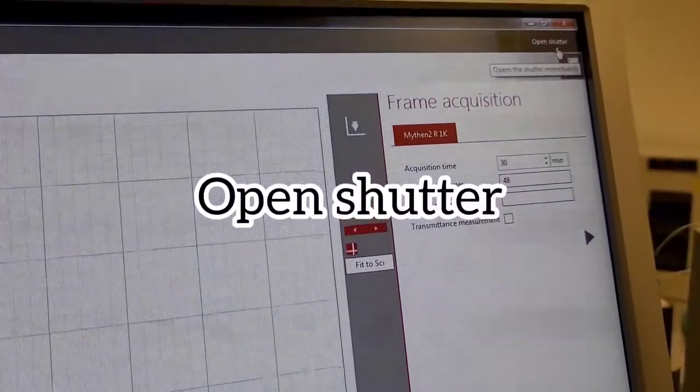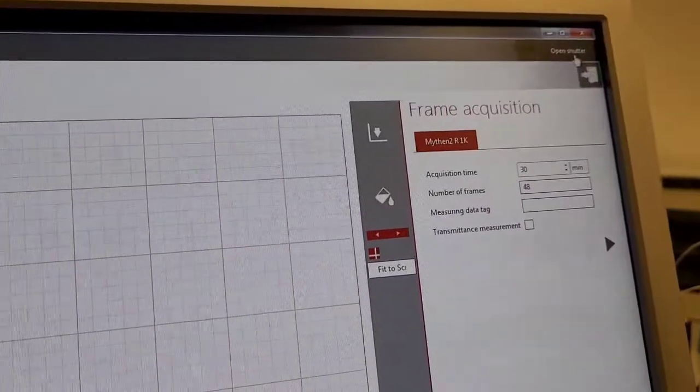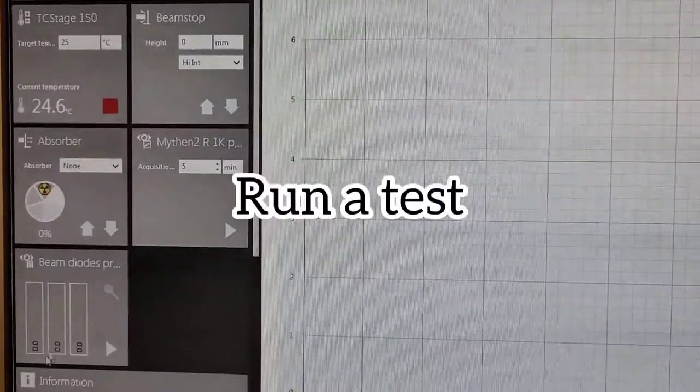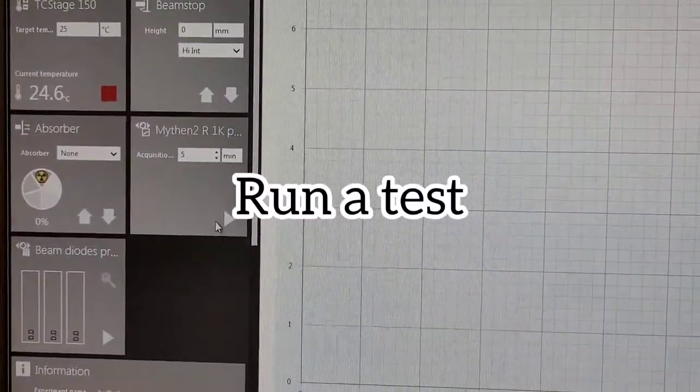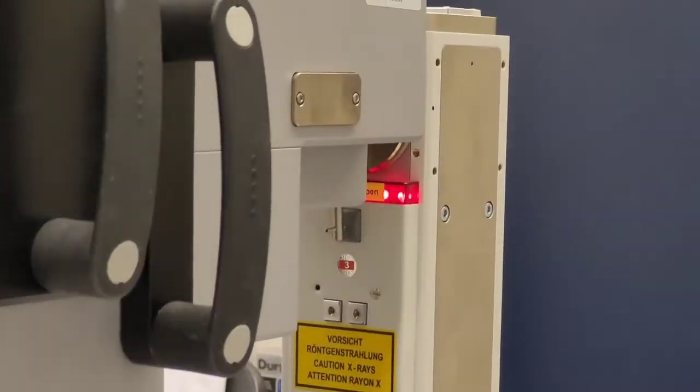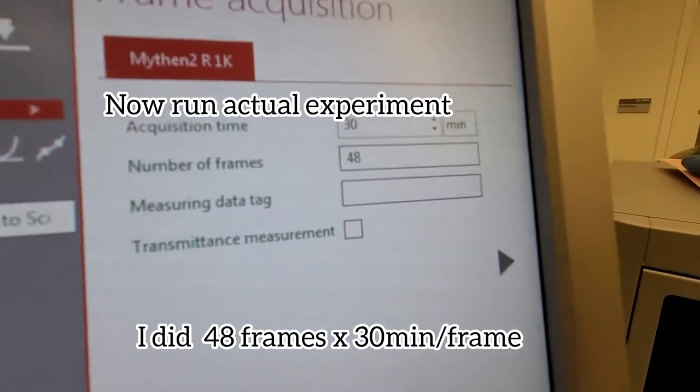Then I'm going to control the temperature. Now open the shutter so the x-ray will actually go through the box where my sample is in it. Once I do that I can finally do a test run. When you open the shutter you see a red light come on.